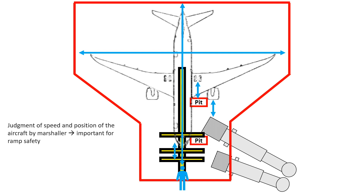This is something that marshallers learn with experience as well. By parking small and large aircraft, marshallers develop a feel of how the aircraft moves and how the distances differ. For example, widebody aircraft can appear to be moving slow even if they are moving at the same speed as a smaller aircraft. Judgment of aircraft speed and position is a must for marshallers for ensuring ramp safety.